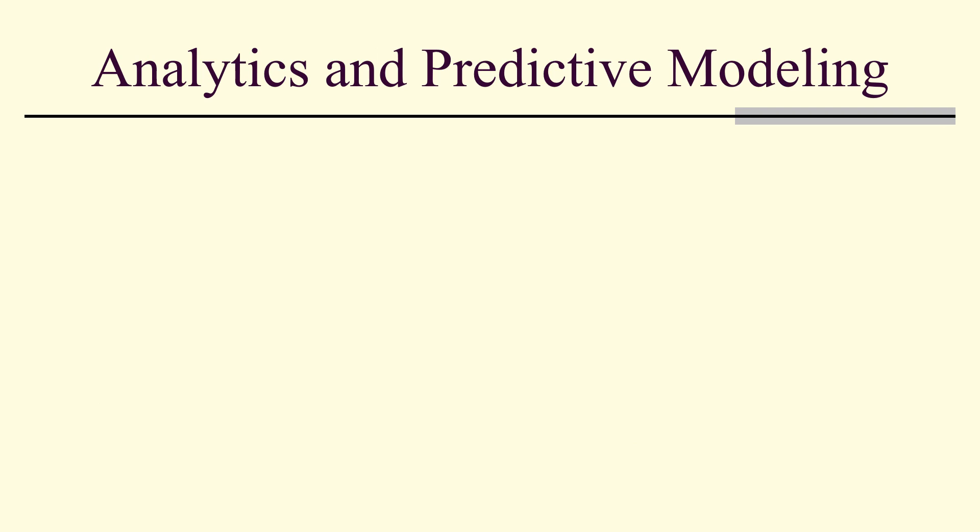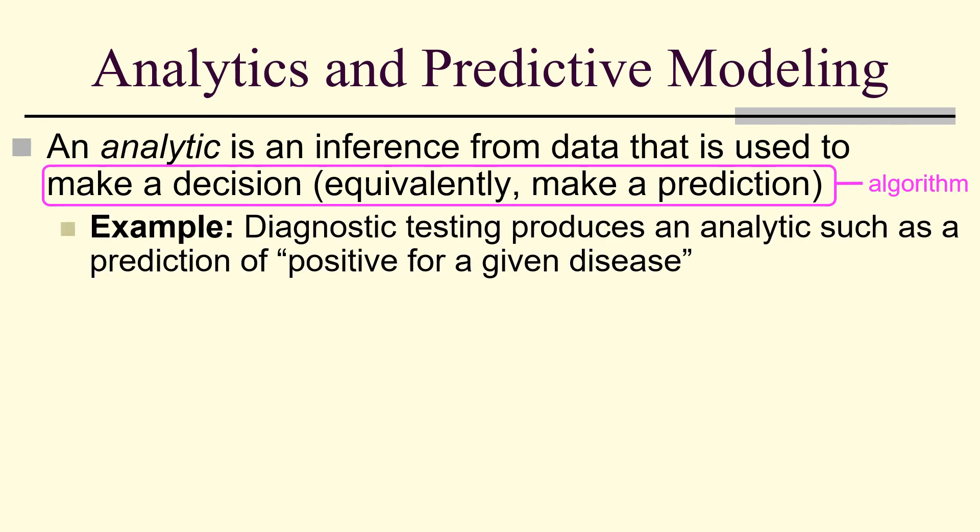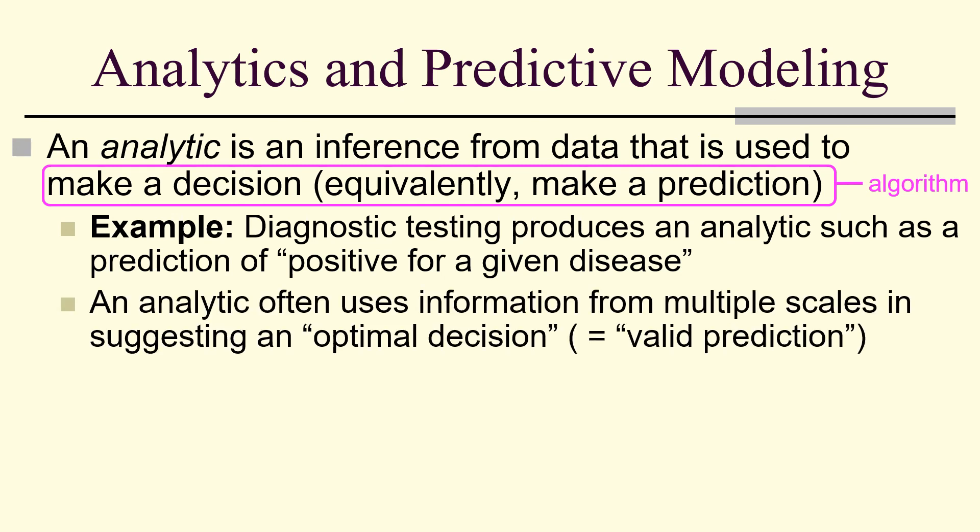Analytic is an inference from data used to make a decision or make a prediction. Making a decision is an algorithm. Diagnostic testing produces an analytics, such as a prediction of whether or not you're positive for a given disease. An analytic often uses information from multiple scales to suggest an optimal decision.